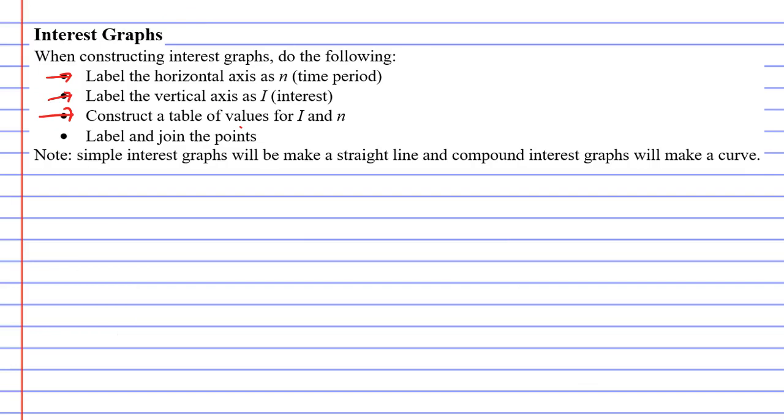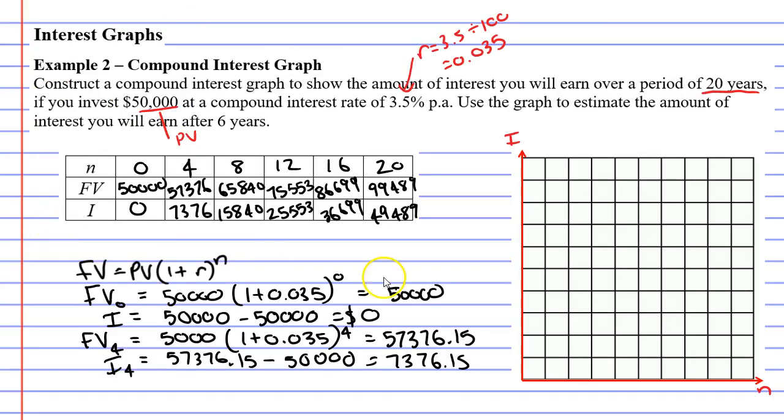The last step is we're going to label and join points on our graph. We need to pick a good scale first. We want n to go up to 20. I think we could start at zero and skip two squares and go up by fours: 4, 8, 12, 16, and 20. That worked out really well.